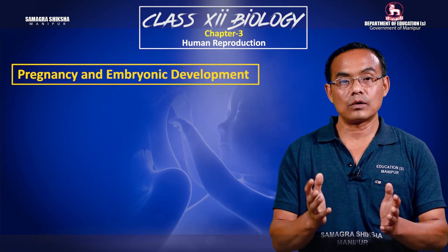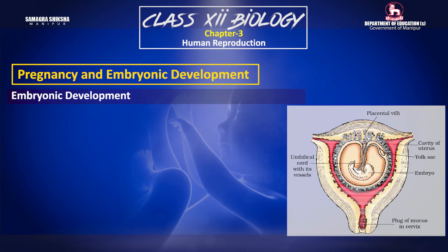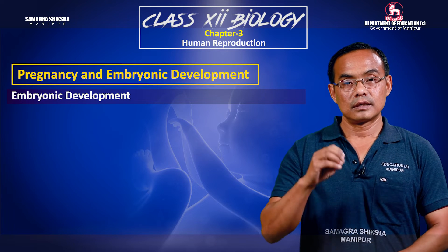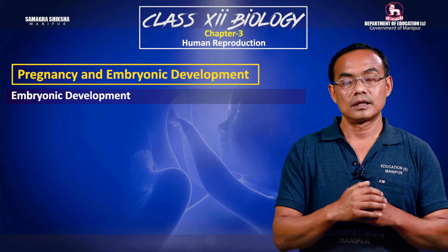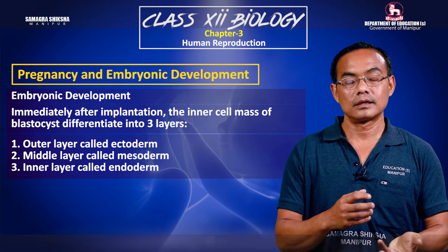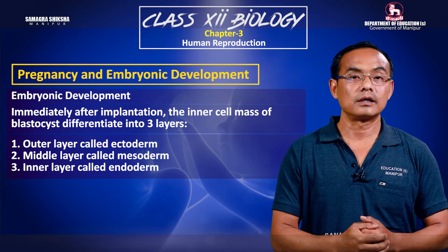Embryonic development involves implantation into the uterus tissue. The embryo at this stage is called a blastocyst. The blastocyst has an outer layer called the trophoblast and an inner cell mass.